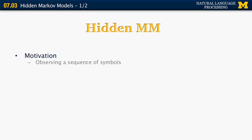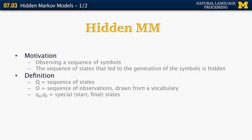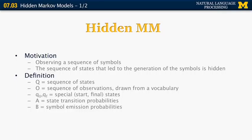In part of speech tagging, we observe a sequence of symbols but we don't know the sequence of states that led to their generation. The symbols we observe are the actual words, and the sequence of states are the parts of speech corresponding to those words. The definition of a hidden Markov model includes: Q, a sequence of states; O, a sequence of observations drawn from a vocabulary; Q0 and Qf, specific start and final states; A, the set of state transition probabilities, just like in the visible model. We also have a new set of parameters B, the symbol emission probabilities — the probability of emitting a certain symbol from a given state. And pi, the initial state probabilities.